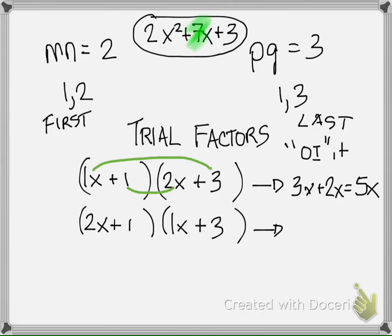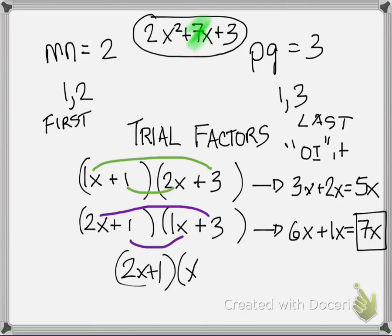Let's try OI-ing the second one. So my outside terms and my inside terms, I get 6x plus 1x. That gives me 7x. That does work. So this, 2x plus 1 times x plus 3 is my answer and that's what we had started off with.